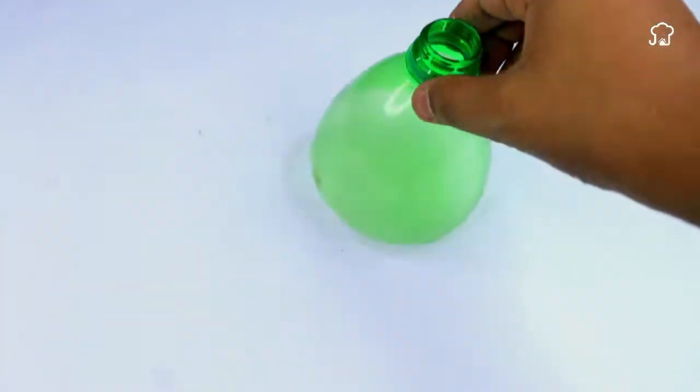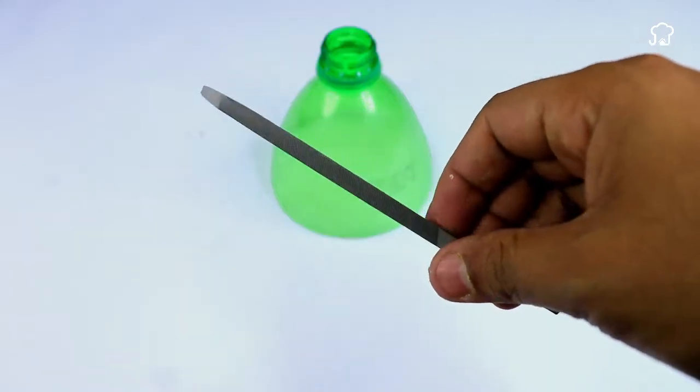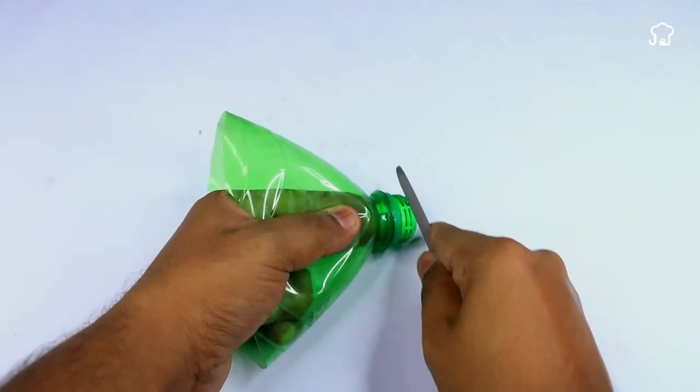Then, with sandpaper, smooth the edges of the bottle's nozzle to avoid possible cuts and facilitate the insertion of the metal tube.